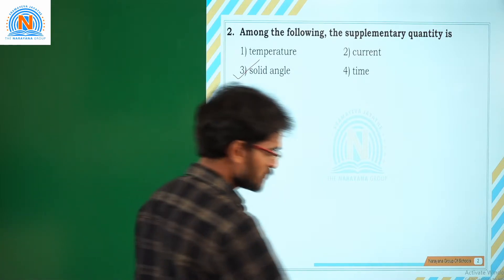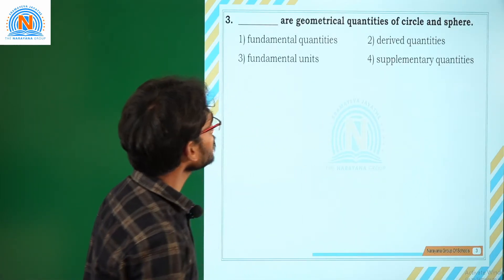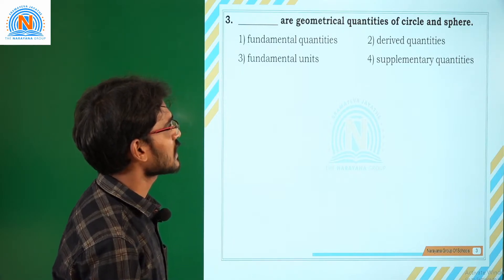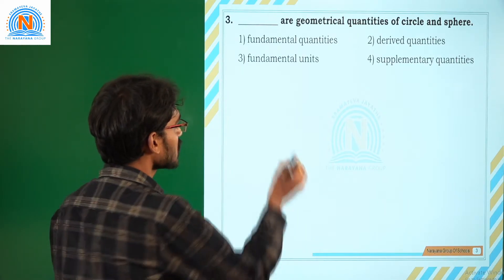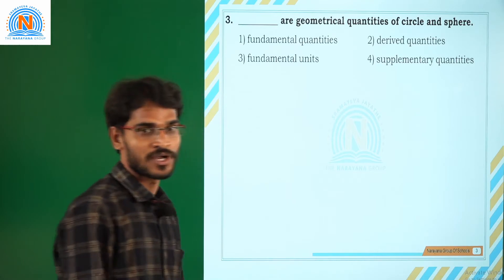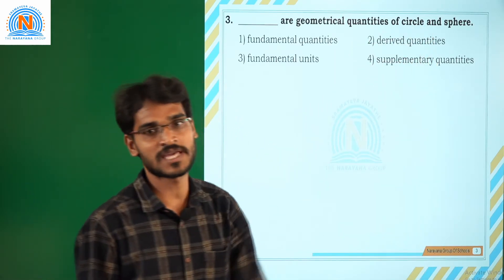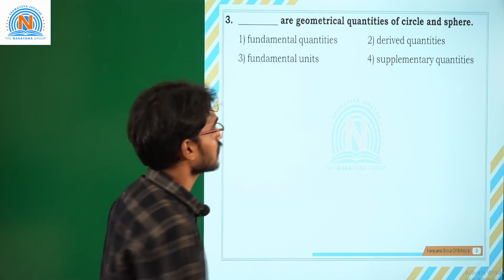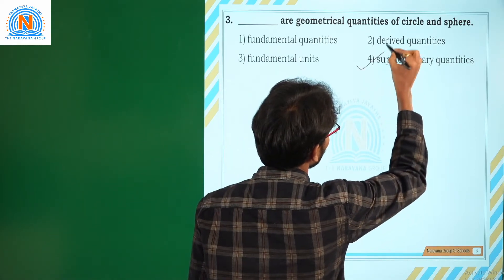Next question: Dash or geometrical quantities of circle and sphere. Supplementary physical quantities are going to decide the geometrical quantities of the circle and sphere. That is why the correct option is 4.